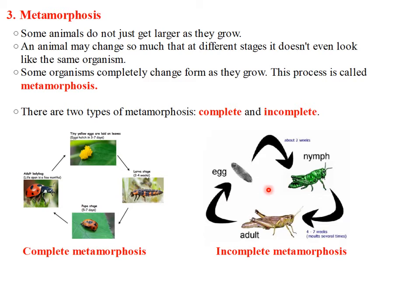Another type of metamorphosis that occurs in some insects is incomplete metamorphosis. In the incomplete metamorphosis, we have three stages: the egg, the nymph, and the adult. The nymph stage looks like a smaller version of the adult, but a nymph cannot fly or reproduce. As the nymph grows, it molts or sheds its hard outer shell. The nymph molts several times until it finally becomes an adult.